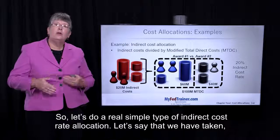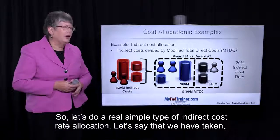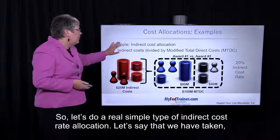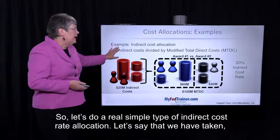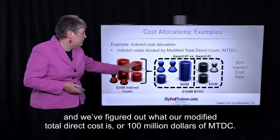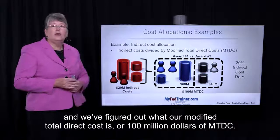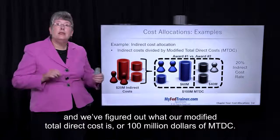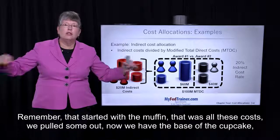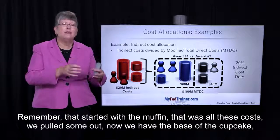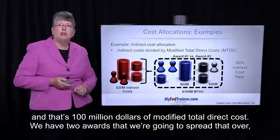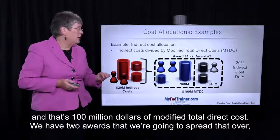Let's do a real simple type of indirect cost rate allocation. We've figured out what our modified total direct cost is — a hundred million dollars of MTDC. Remember that started with the muffin; that was all these costs, we pulled some out, and now we have the base of the cupcake — that's a hundred million dollars of modified total direct cost.